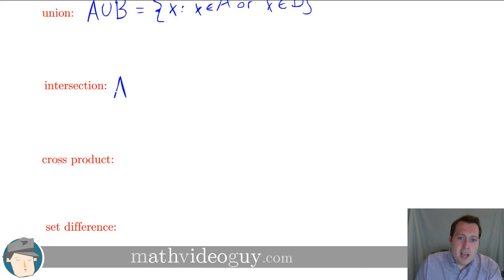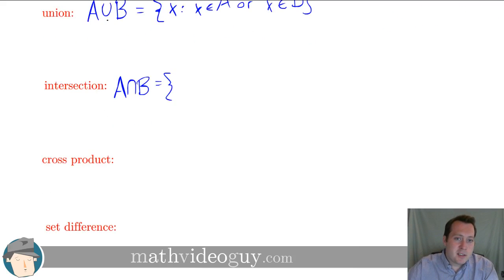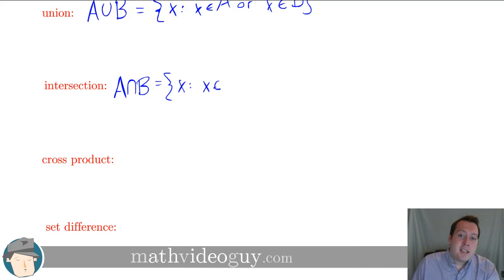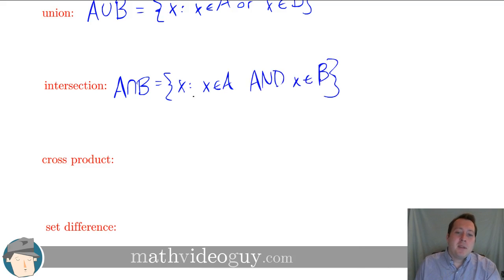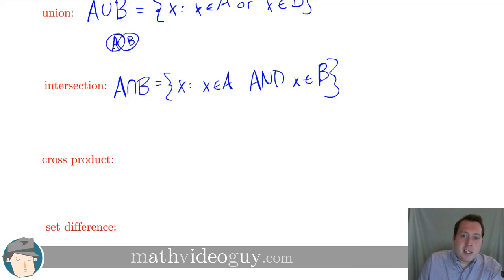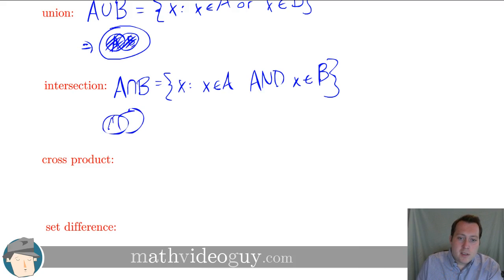We also have the intersection: A ∩ B — note the union symbol looks like a U and the intersection is like an upside-down U. The intersection is the set of all x such that x is in A and x is in B, meaning something must be in both sets to be in the intersection. Looking at Venn diagrams: the union covers everything in both circles, while the intersection is only the overlapping region.